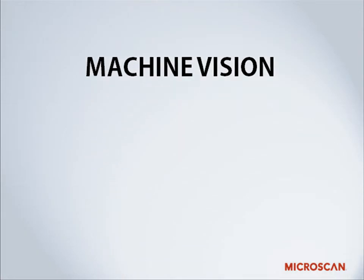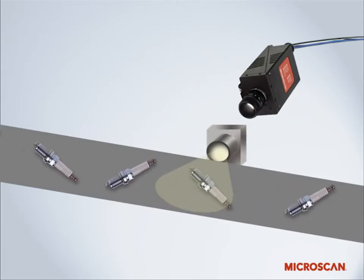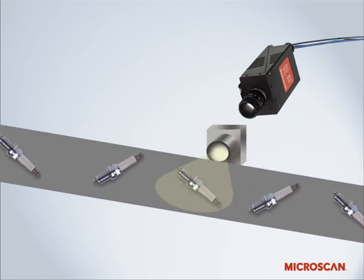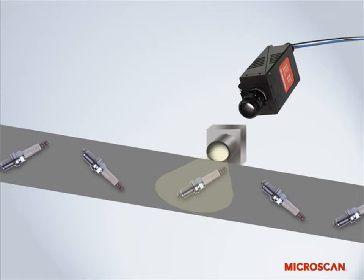Let's get started with a definition of machine vision. Machine vision is defined as the automatic extraction of information from digital images. Let's look at a very basic breakdown of a typical machine vision process.